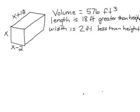Looking at our box we already have our dimensions given. The length is 18 feet greater than its height, so this side is the length. The width is 2 feet less than the height, so this is the width. The other side left has to be the height.